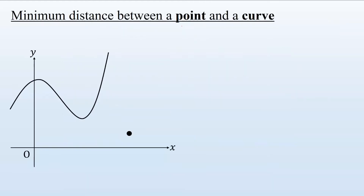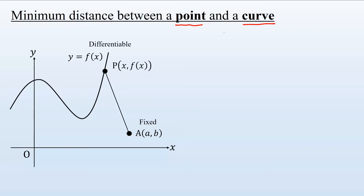When does the distance between a point and a curve become minimum? Consider a differentiable curve y equals f(x) and a fixed point A with coordinates (a, b) outside the curve. To handle the distance between point A and the curve, we consider the distance between point A and an arbitrary point P on the curve.